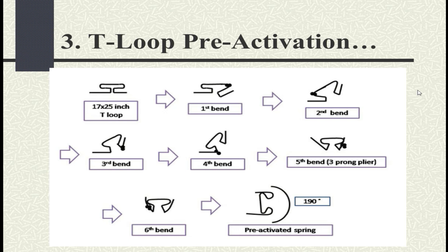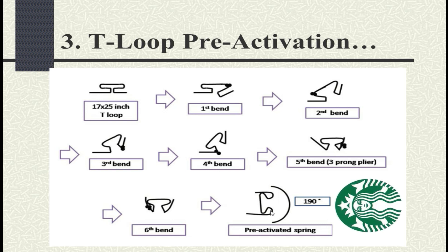The third question is T-loop pre-activation. This photograph is taken from Marcotte, and in many textbooks you will find a diagram showing a T-loop made in 17×25 TMA. There are six bends: the first through fourth are given with bird-beak plier or light wire plier, and the next bends are given by three-prong pliers. The final image of the activated T-loop looks like a Starbucks logo. However, notice that the angulation and the distance of the T-loop are not specified, and if you try to give activation bends on your own you will realize these are excessive bends.